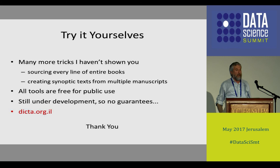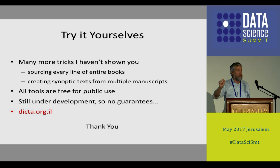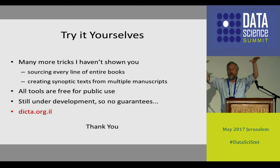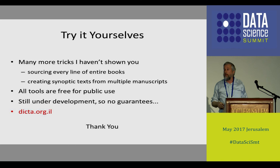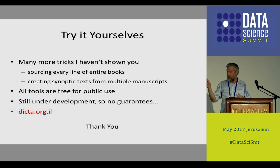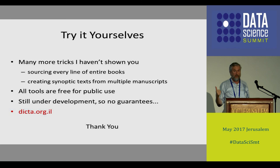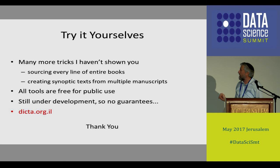There's also a lot of other stuff I didn't show — for example, sourcing every line of a book. Given a book with a million words, we can find every single line that may be a paraphrase of something written before it. We did this on the Babylonian Talmud — two million words cross-referenced against itself — and found more than 5,000 paraphrases. You can adjust how long the paraphrases need to be and how many differences you're willing to allow. What's amazing is not just that you can do it, but that you can do it efficiently using clever hashing techniques.